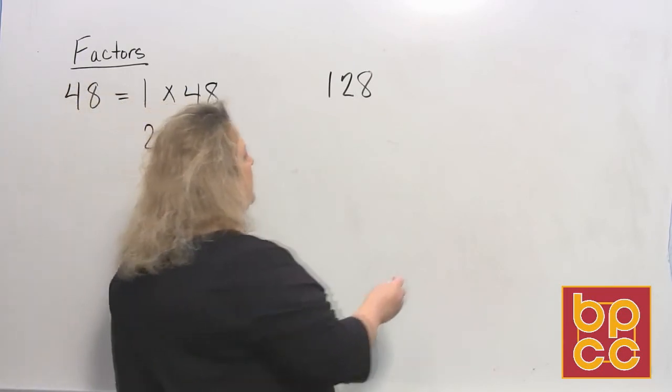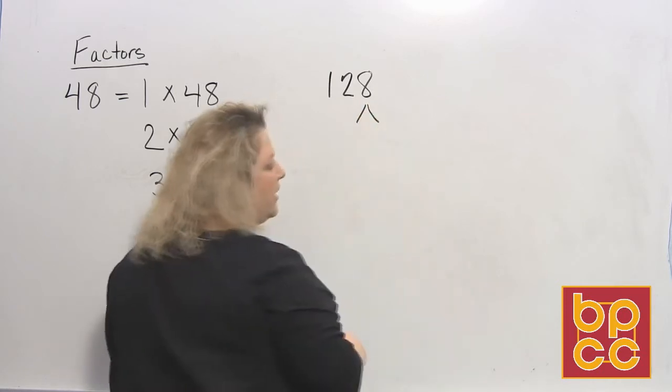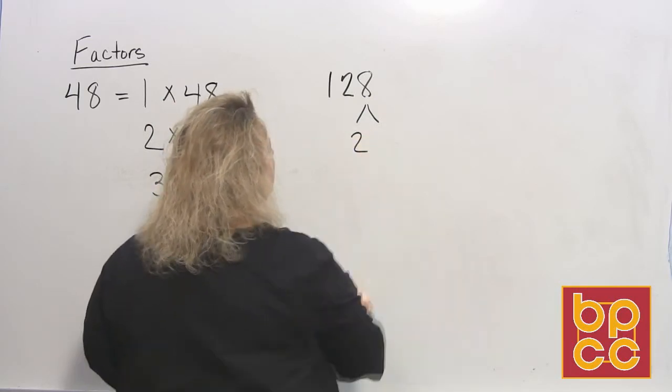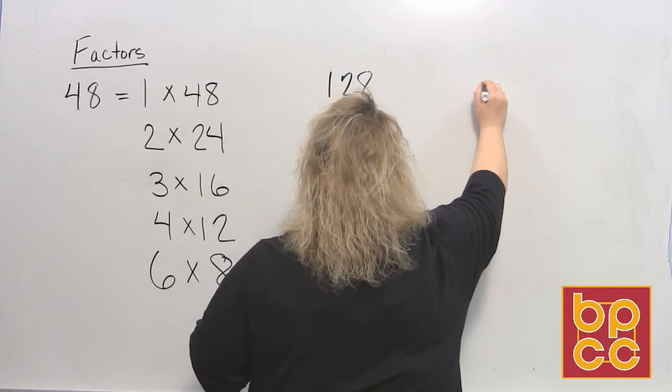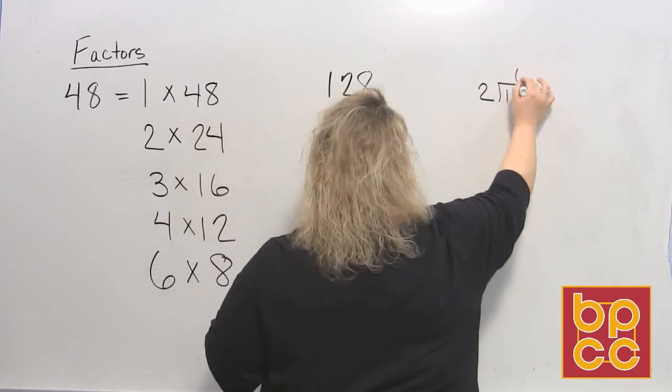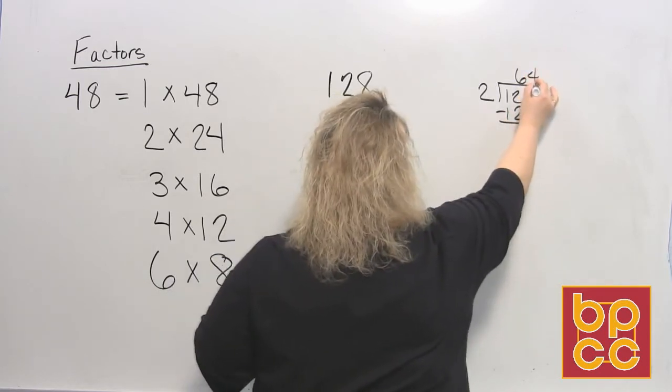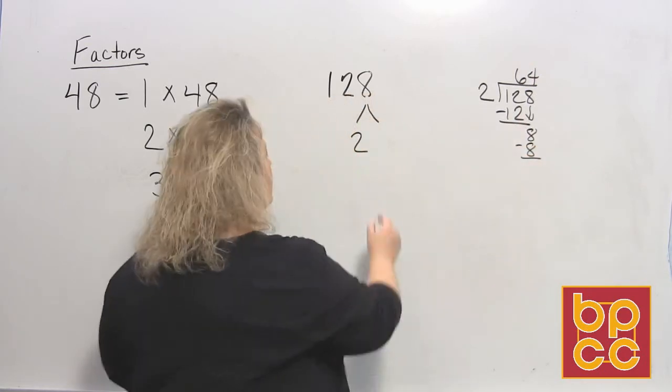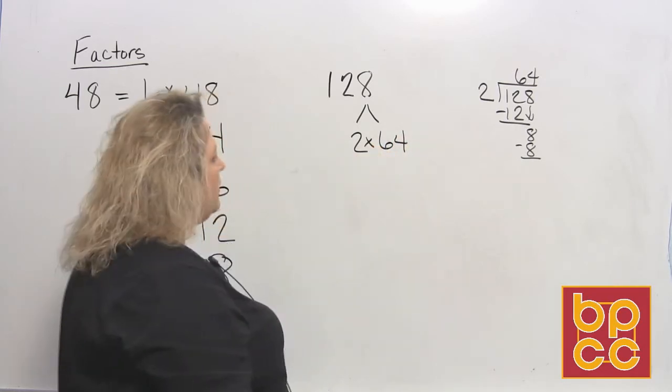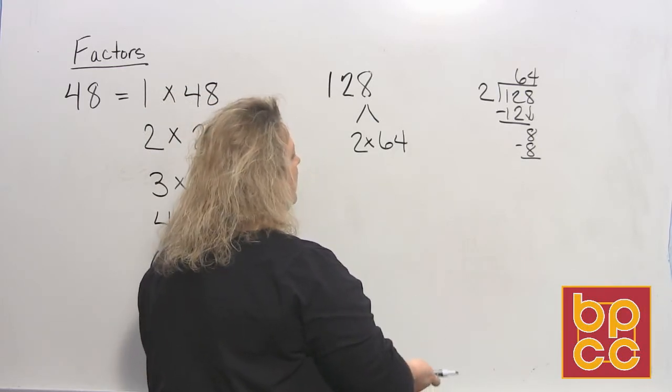I'm going to show you another way to do this, and that is to list them like a factor tree. Again, it ends in 8, which is an even number, so let's say 2. If you need to do scratch work, you can do it over to the side and say, how many times does 2 divide into 128? 2 divides into 12 six times, which makes 12. Bring down the next number. 2 divides into 8 four times. 2 times 4 is 8, so 2 divides in there 64 times. So 2 times 64 will give me that. That could just be another way to help you in case you don't automatically know what goes in there.